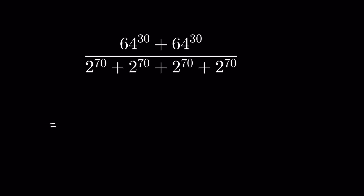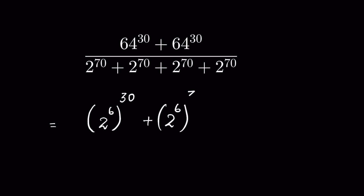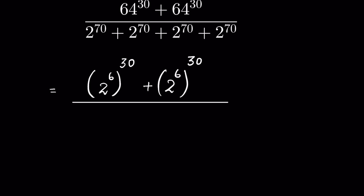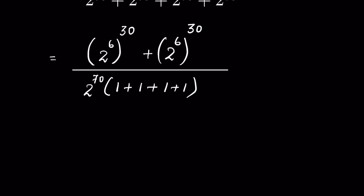Now 64 we can write as 2 to the power 6, so the numerator becomes (2⁶)³⁰ + (2⁶)³⁰, and the denominator we take 2 to the power 70 as common to get 2⁷⁰ × (1 + 1 + 1 + 1). There is an identity: (aᵐ)ⁿ = aᵐⁿ.